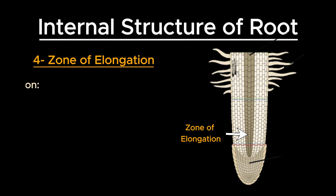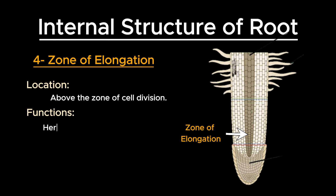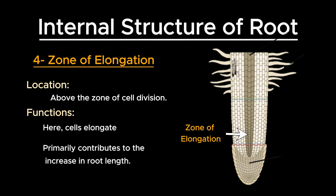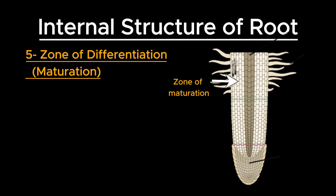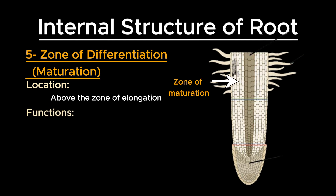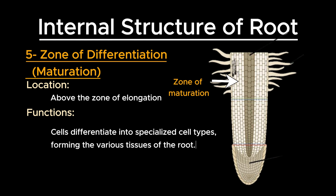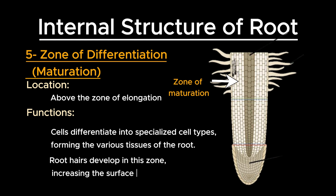The fourth one is the zone of elongation. It is above the zone of cell division. Here, cells produced in the meristem elongate, pushing the root tip further into the soil. This region primarily contributes to the increase in root length. The last one is the zone of differentiation or maturation. It is above the zone of elongation. Here, cells differentiate into specialized cell types, forming the various tissues of the root. Root hairs develop in this zone, which increases the surface area for water and nutrient absorption.